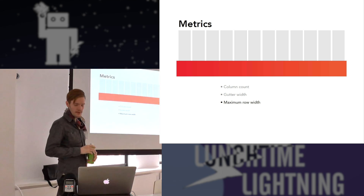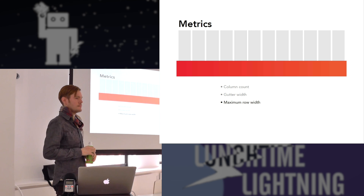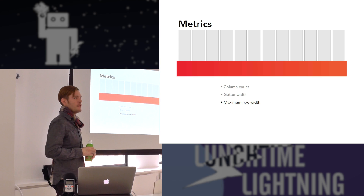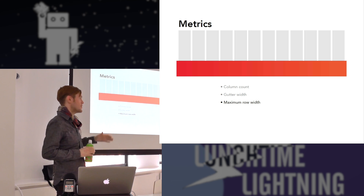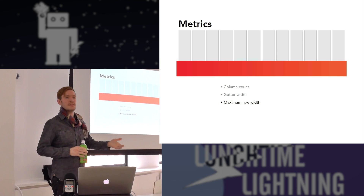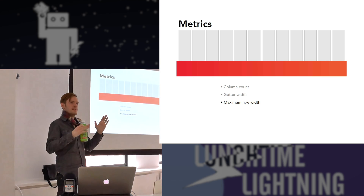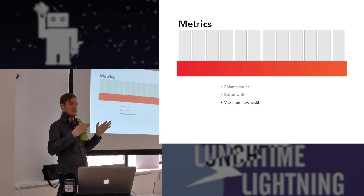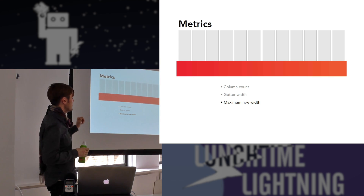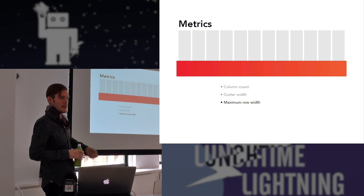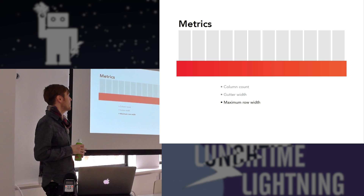That's essentially the difference between a fixed versus a fluid grid. A responsive grid is fluid and percentage-based. You could have static values for everything — like an old 960-pixel website that's just fixed at 960 and that's it. In that scenario you wouldn't have any real variables; everything would be fixed and you could make very particular assertions about how big everything is going to be.